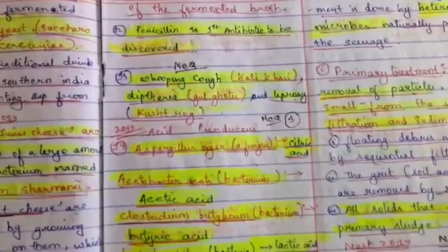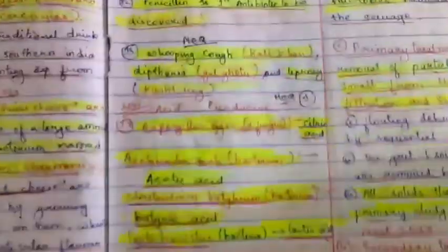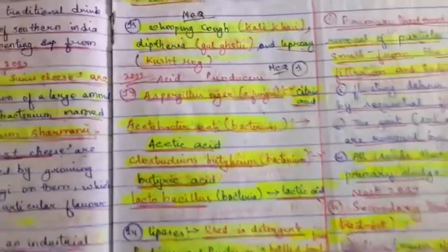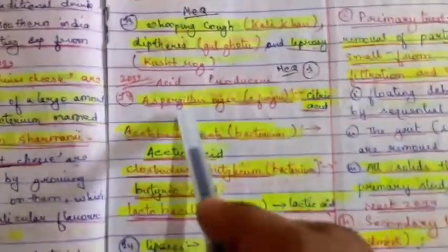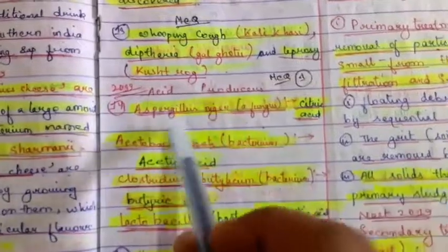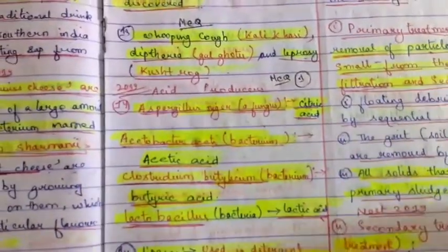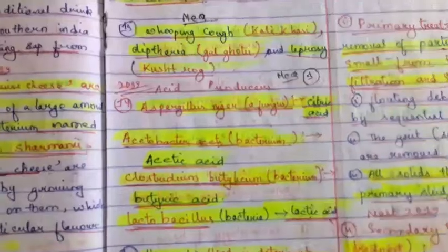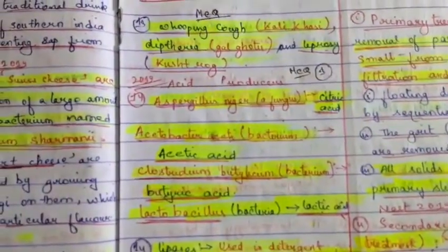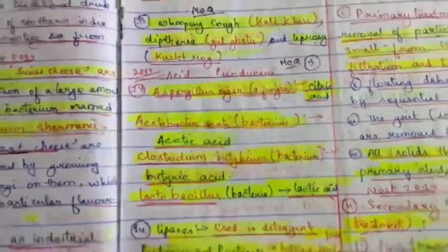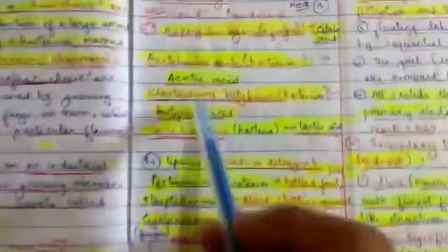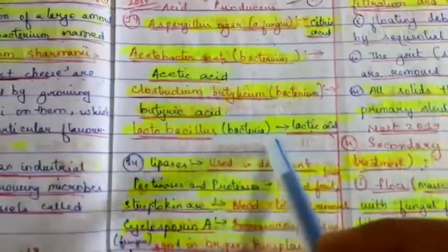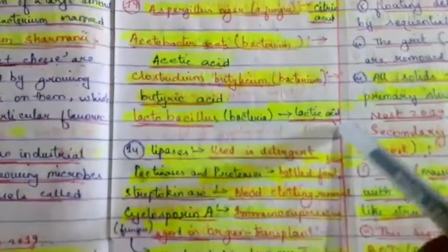Match the following, asked in 2019: Aspergillus niger (fungus) produces citric acid. Acetobacter aceti (bacterium) produces acetic acid. Clostridium butylicum (bacterium) produces butyric acid. Lactobacillus (bacteria) produces lactic acid.